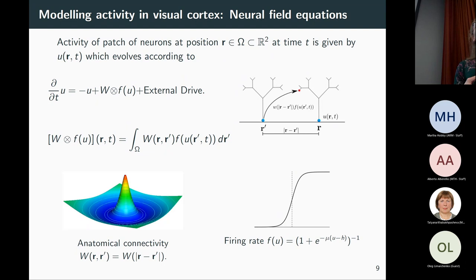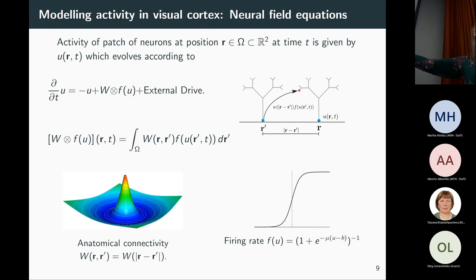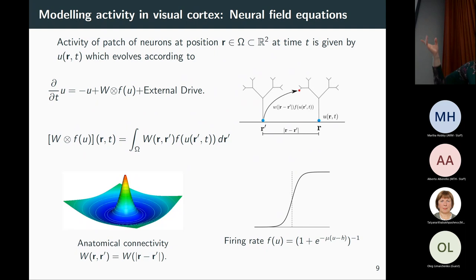A question about having explicit excitatory and inhibitory populations. If you have both at every point in cortex, you end up with four connectivity functions W describing the interactions within and between the populations. Some of those can be taken to zero without affecting the results. It just makes the whole thing more complicated, and it's easier to use a single-population model here since as long as you have some inhibitory and some excitatory connections it all works out. The original work of Ermentrout and Cowan was indeed done with a two-population model.